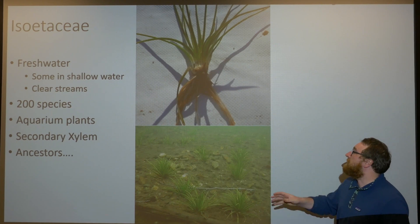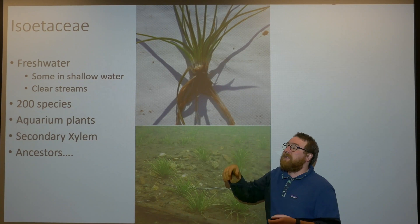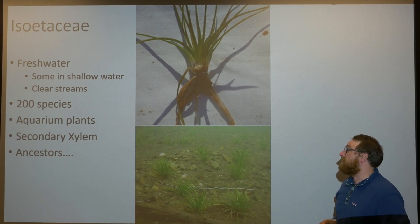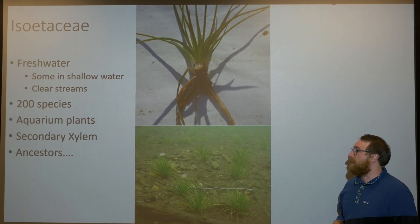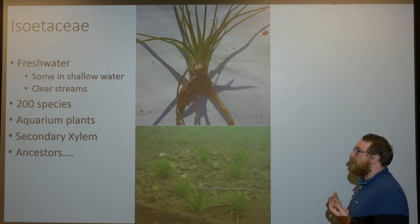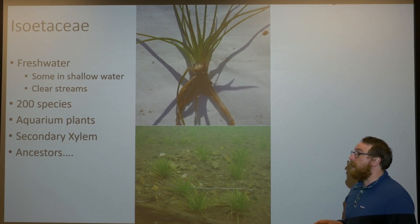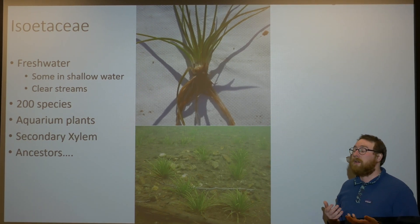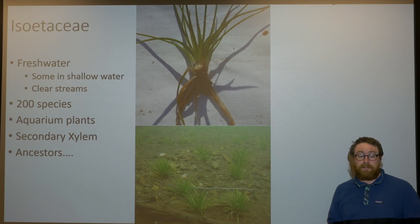Their spores are located in a basal area, and by peeling back these leaves you'll reveal the megaspores that are common in the Lycopodiaceae, as well as again that secondary xylem. When we think about Isoetaceae now we think about these small plants, but really they're the direct descendants of a long line of really important plants that were some of the first to get on land — especially some of the first to evolve woodiness because of this secondary xylem tissue.